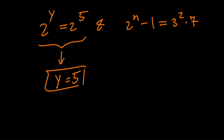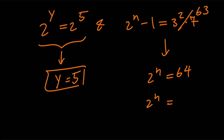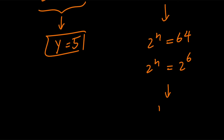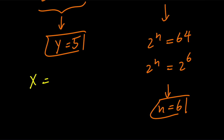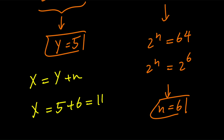The right-hand side of the second equation is 63. Therefore, 2 to the power of n minus 1 equals 63, so 2 to the power of n equals 64, and 64 is 2 to the power of 6. So n equals 6. But we wanted to solve for x and y. Remember that x equals y plus n, therefore x equals 5 plus 6, which equals 11.